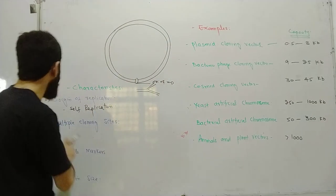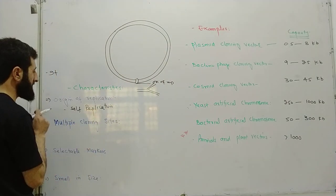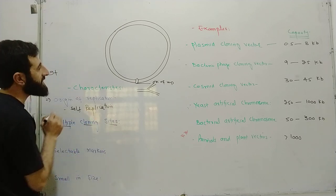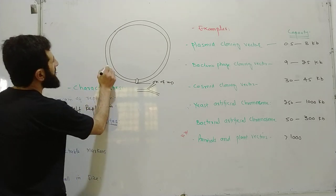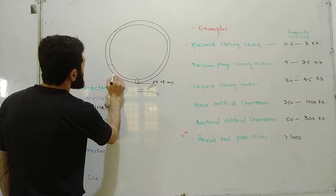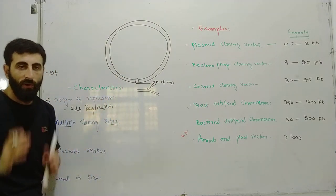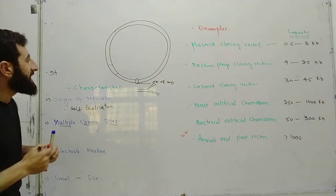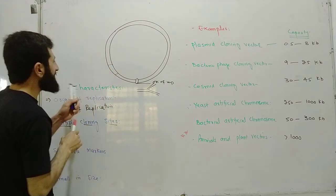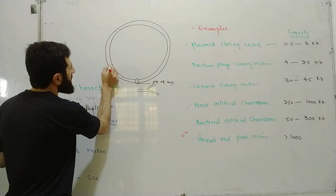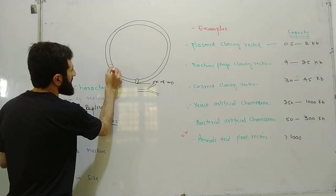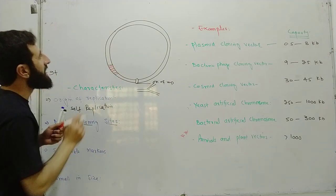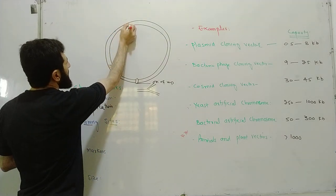Another property is multiple cloning sites. Multiple cloning sites means that there are specific locations inside the plasmid where you can insert foreign DNA — these are the cloning sites within the plasmid.